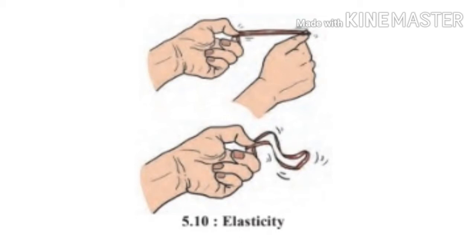Our next property is elasticity. You can do this activity at home. Stretch a rubber band and let it go or apply pressure on a piece of sponge and release it. Some substances change their shape when force is applied but return to their original shape when the force is removed. This property is called elasticity.